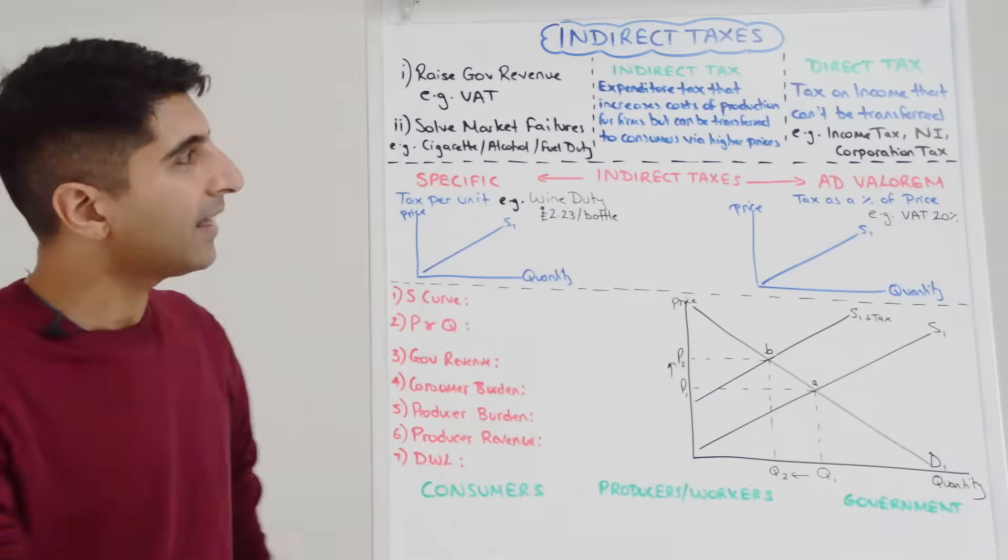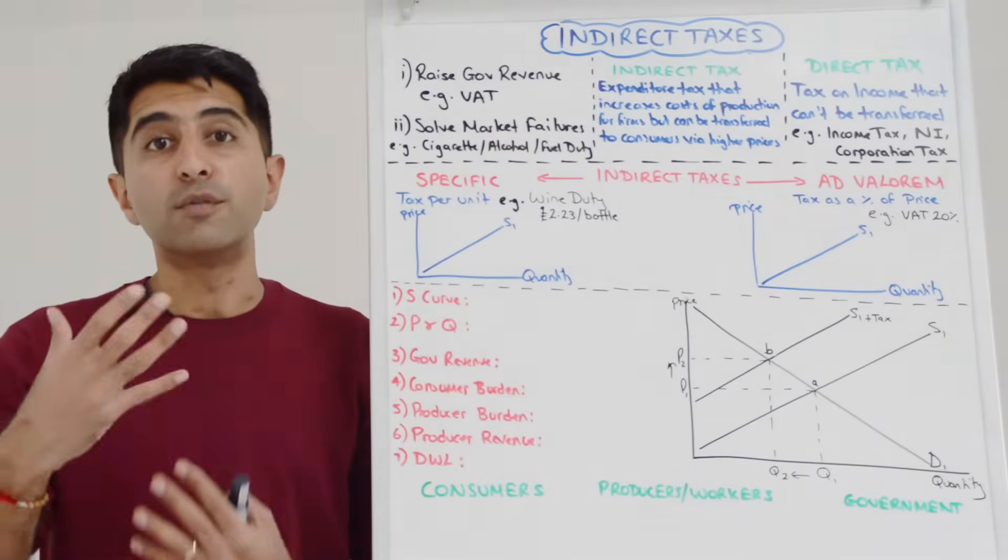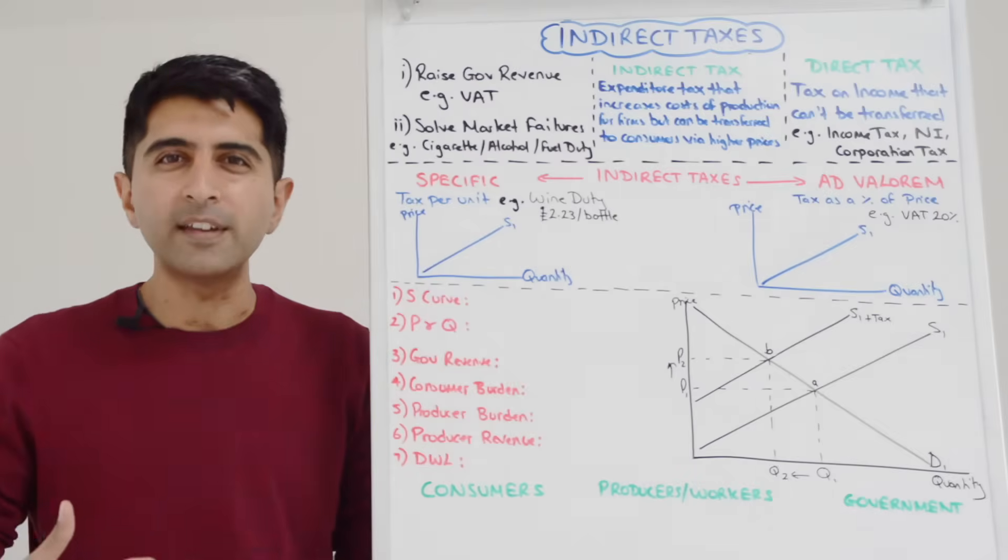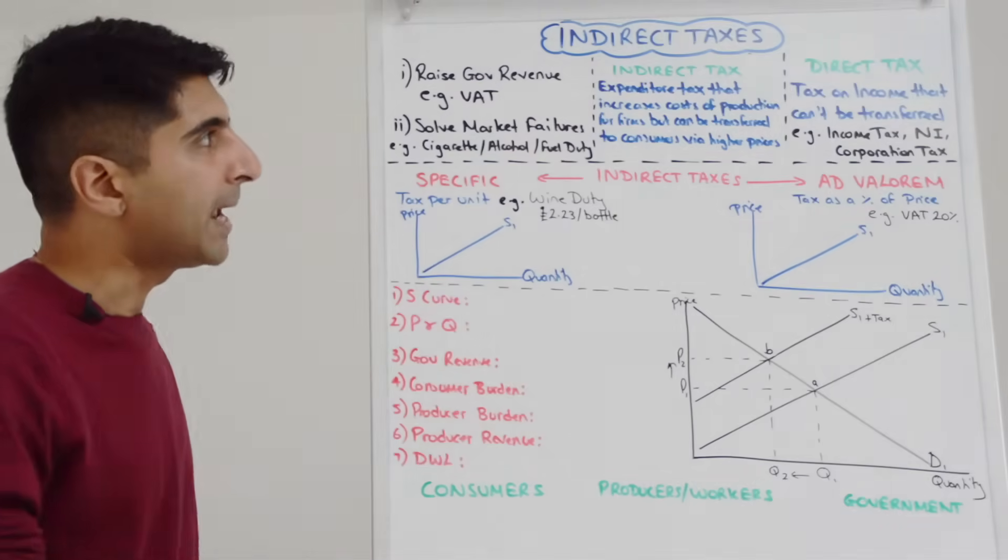Taxes like that, those taxes are aimed to solve market failure, to reduce consumption, to reduce production of goods and services that do a lot of harm to society. So that's what those taxes are aimed at.